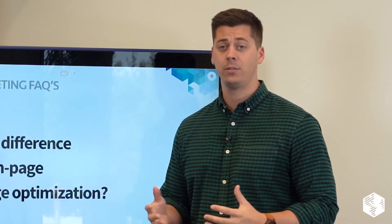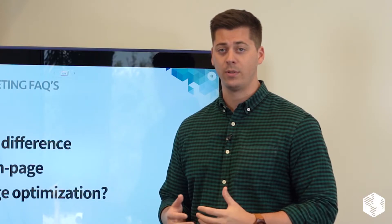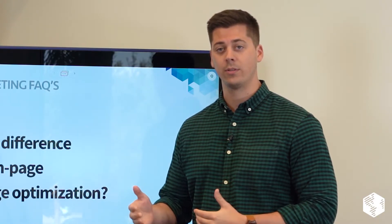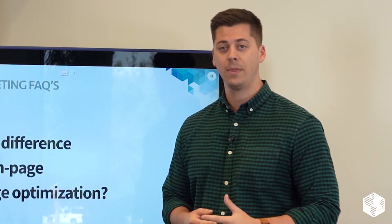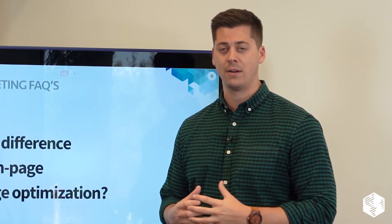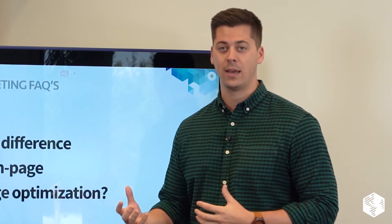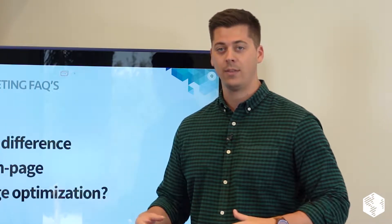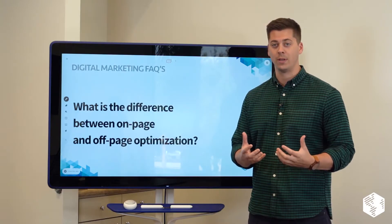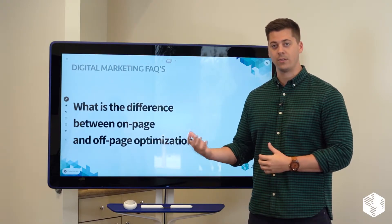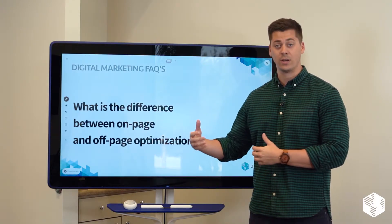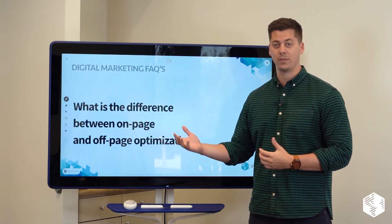Google looks at hundreds of different data points and variables when determining what the search engine results are going to be, but they really all boil down into two main categories. There's the on-page optimization, or what's on your website, and then there's the off-page optimization, or what's on other people's websites.